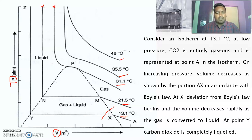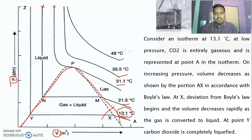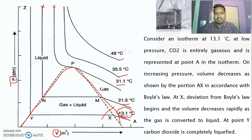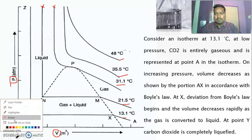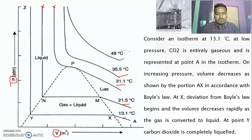Let us start with the isotherm at a very low temperature: 13.1°C. Here, a dotted line is present. Carbon dioxide which falls within this dotted line is in equilibrium with the liquid — there is an equilibrium between gaseous and liquid carbon dioxide. At 13.1°C, if you go on decreasing the volume from A to X, the carbon dioxide is in the gaseous state. But when it reaches point X, the carbon dioxide starts to liquefy — it is not completely converted into liquid.